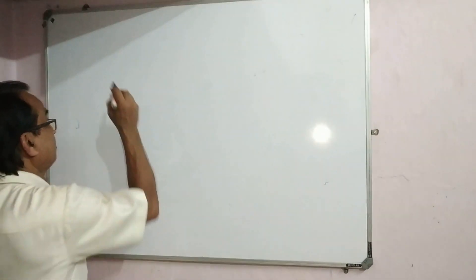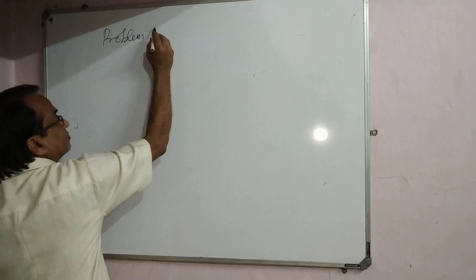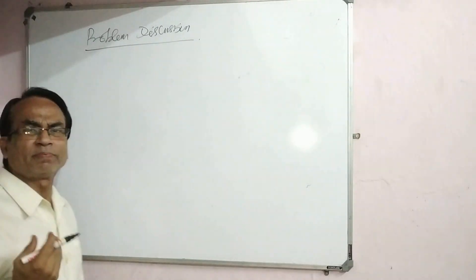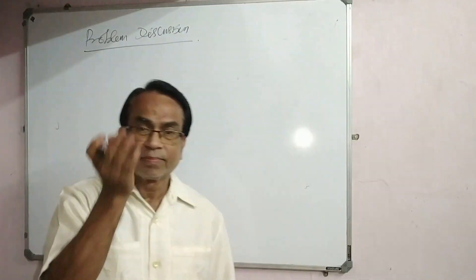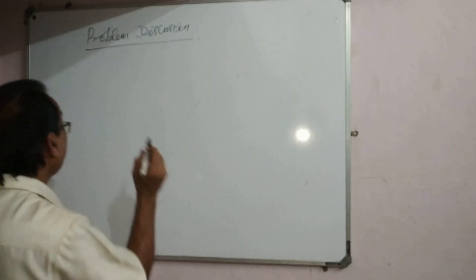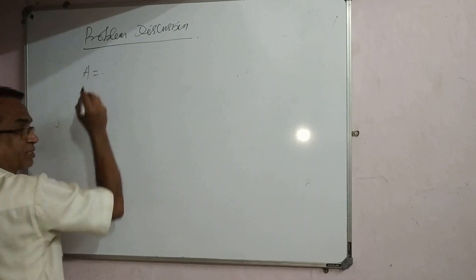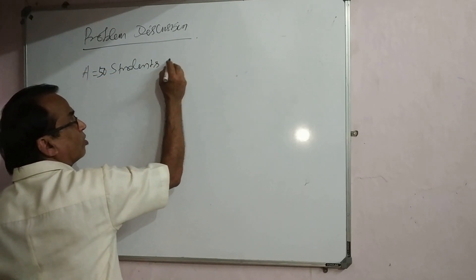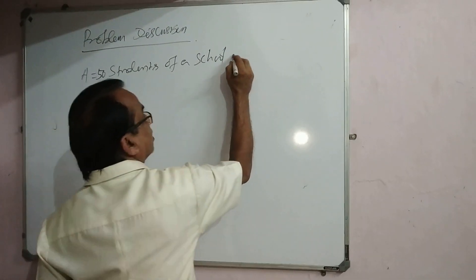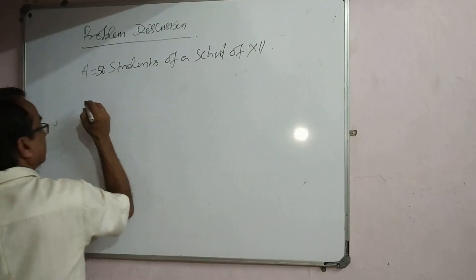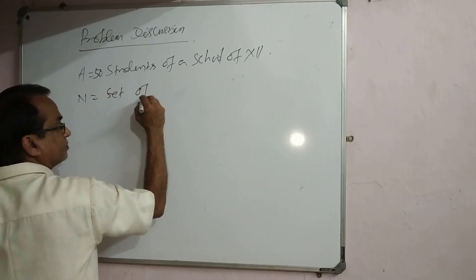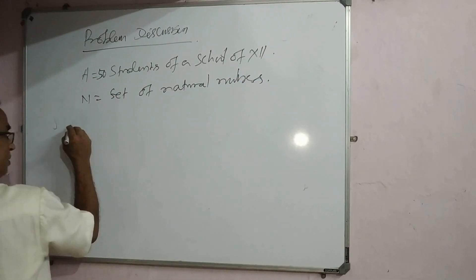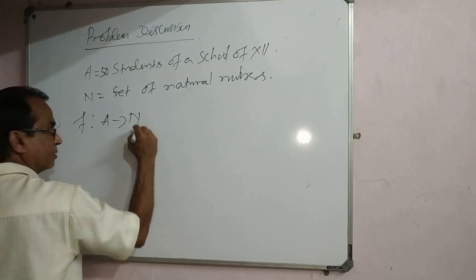Now problem discussion. Coming to real life situation, NCERT volume 1, page 8, example 7. Let A be the set of 50 students of the school of class 12 and N the set of natural numbers.